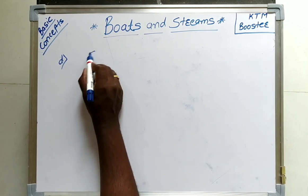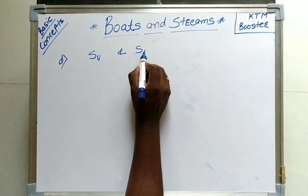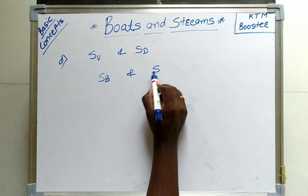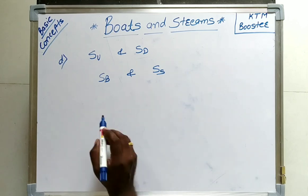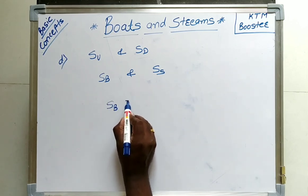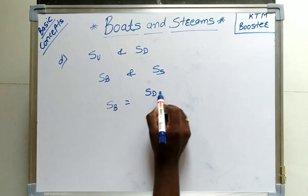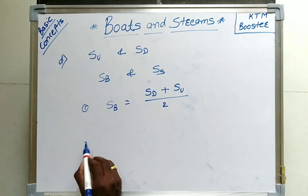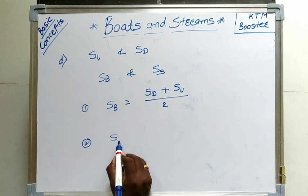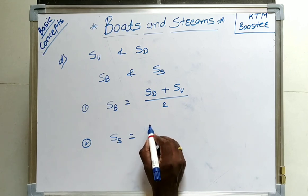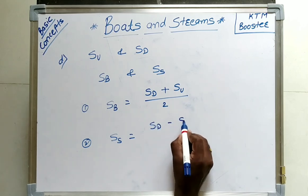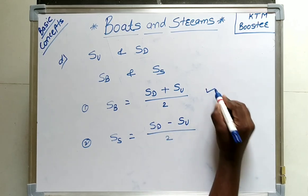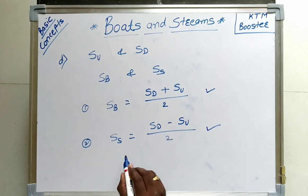When upstream speed and downstream speed are given, the speed of boat and speed of stream can be calculated using the formulas: speed of boat SB equals downstream speed plus upstream speed divided by 2, and speed of stream SS equals downstream speed minus upstream speed divided by 2.